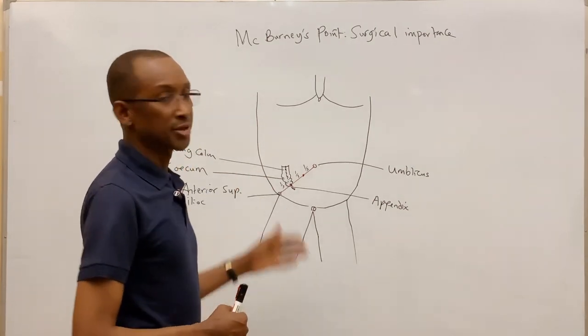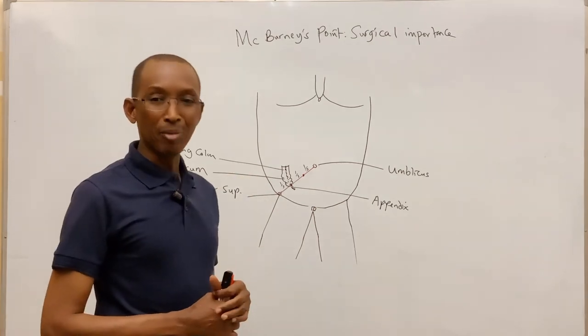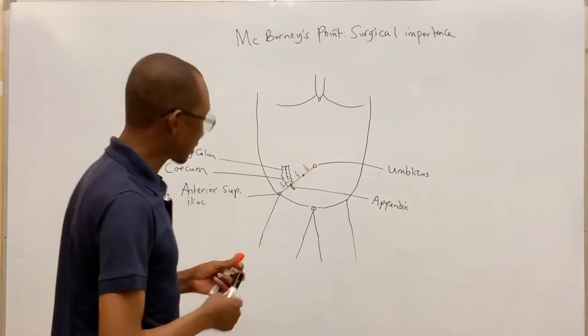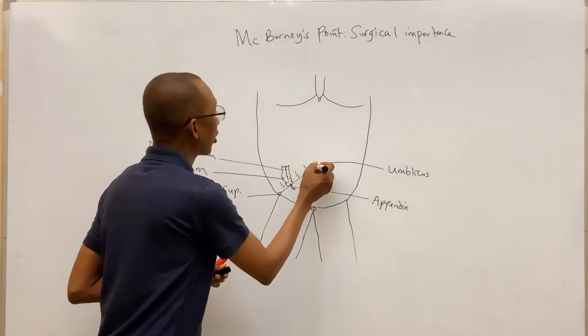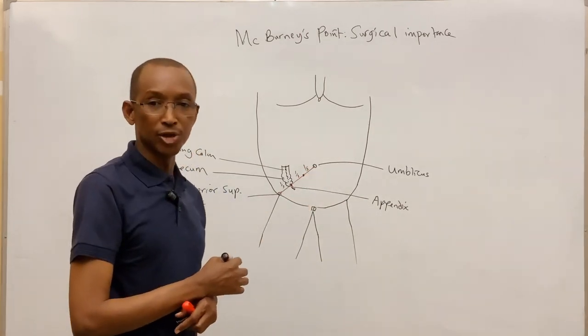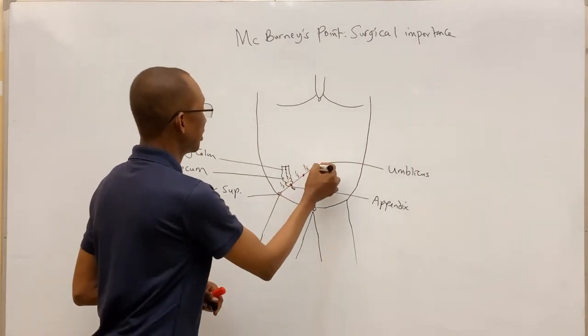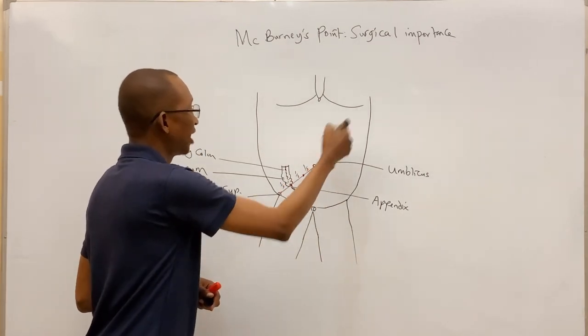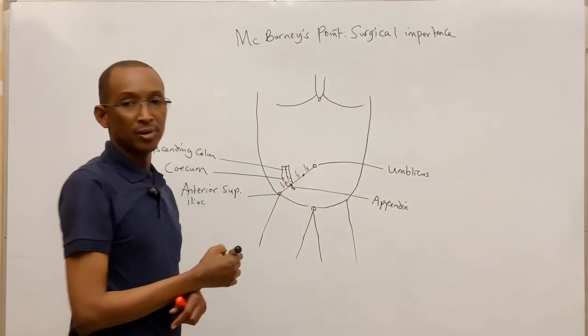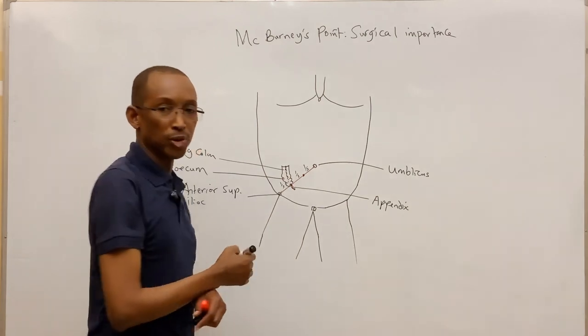McBurnie's point is a landmark that is lying on an imaginary line passing from the umbilicus down to the anterior superior iliac spine. So this imaginary line passes downward and laterally from the umbilical region down to the anterior superior iliac spine.